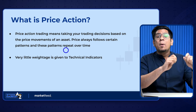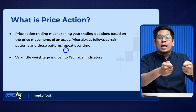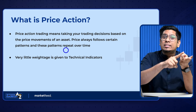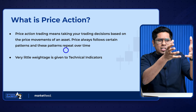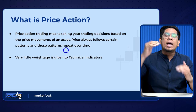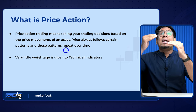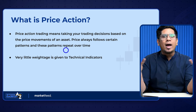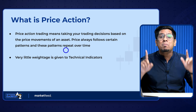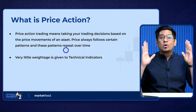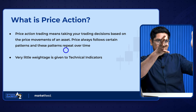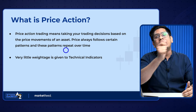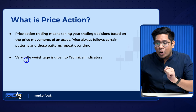When a price action trader looks into a chart, they can see price is following a certain pattern or trend. Because they understand candlesticks, trend lines, and volume well, they can identify that a pattern is being formed — and because of that there is a high probability that either a breakout, breakdown, or trend reversal can happen from a specific point. Based on that they'll take a high probability trade, and because it's a high probability trade there's a high chance of making profits.